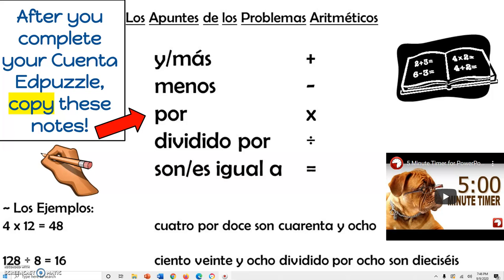Now one of the common things you use numbers for is to do math problems. So let's review quickly together how to say plus, minus, divided by, etc. Say with me: y and más. Both of those mean plus. So if you're saying 2 plus 2, you can either say dos y dos, or dos más dos. Más is a little bit more formal than just y.